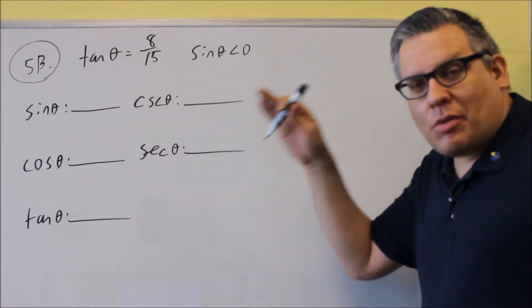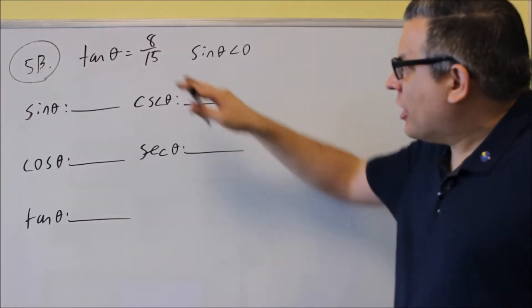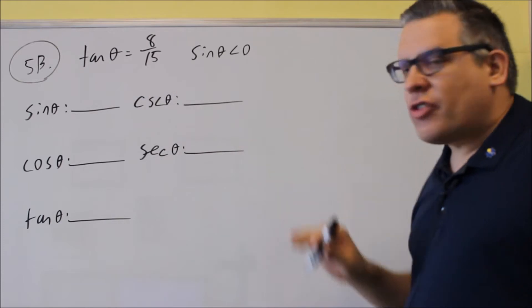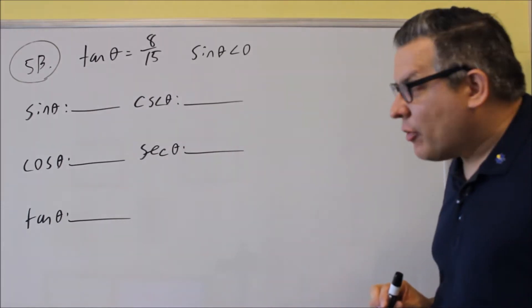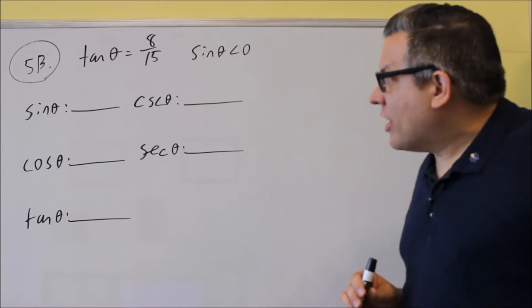So now it doesn't come out and tell us exactly what quadrant we're in. Before we draw the triangle and label the sides, we have to first figure out what quadrant it's in. Now, we have tangent is positive and sine is less than zero.